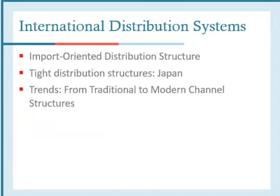Regarding international distribution systems, we have three systems that can be characterized by the distribution structure. The first is the import-oriented distribution structure. The second, initially found in Japan and invented by Japanese sellers, is called the tied distribution structure. The third is the trend from traditional to modern channel structure. We will talk about each of these three systems in the following slides.